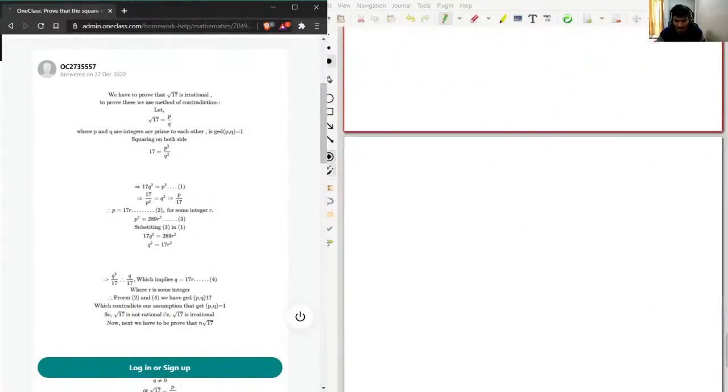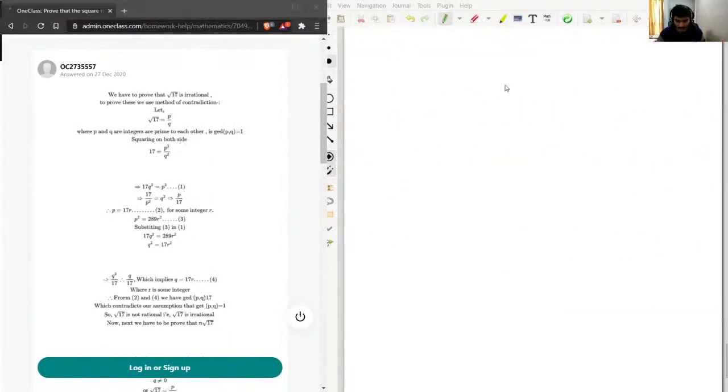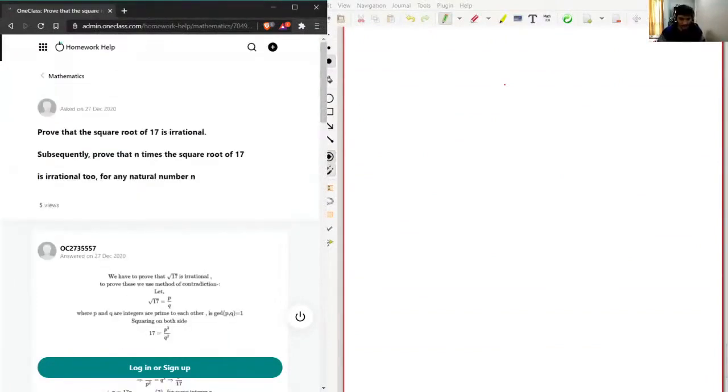So we have the first question here. This is question number one. We need to prove that the square root of 17 is irrational, and subsequently prove that n times the square root of 17 is irrational too for any natural number n. Let me first write the problem statement here: prove that square root of 17 is irrational.